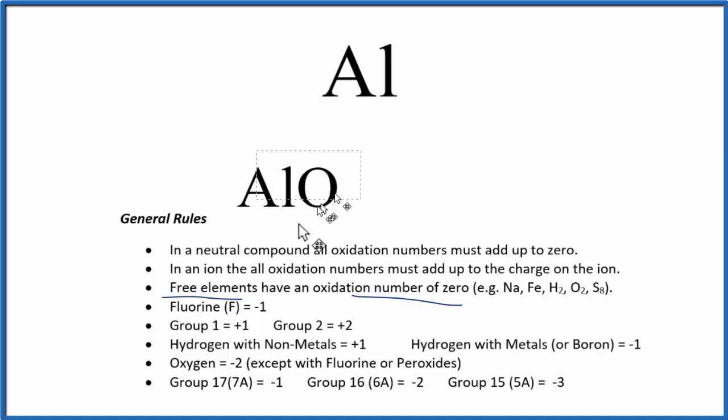One more. For aluminum hydride, AlH, we have to look up hydrogen, which is normally plus one. But when hydrogen is bonded to metals, and aluminum is a metal, we're going to have a minus one charge. So here, the hydrogen is minus one, and the aluminum is plus one. These add up to zero because it's a neutral compound.